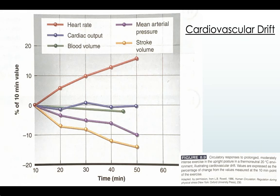Looking at this graph, we can see that as exercise intensity and duration increases, there is a steady increase in heart rate. We can also see that cardiac output is maintained. It's important that cardiac output is maintained so that working muscles receive the amount of oxygen they need.